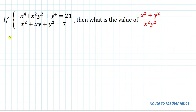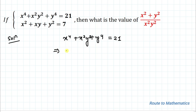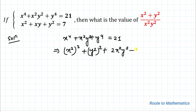Without any delay, let's start the solution. Our first equation is x⁴ + x²y² + y⁴ = 21. From here we can write x⁴ as (x²)², and y⁴ as (y²)², and rewrite x²y² as 2x²y² minus x²y², which equals 21.